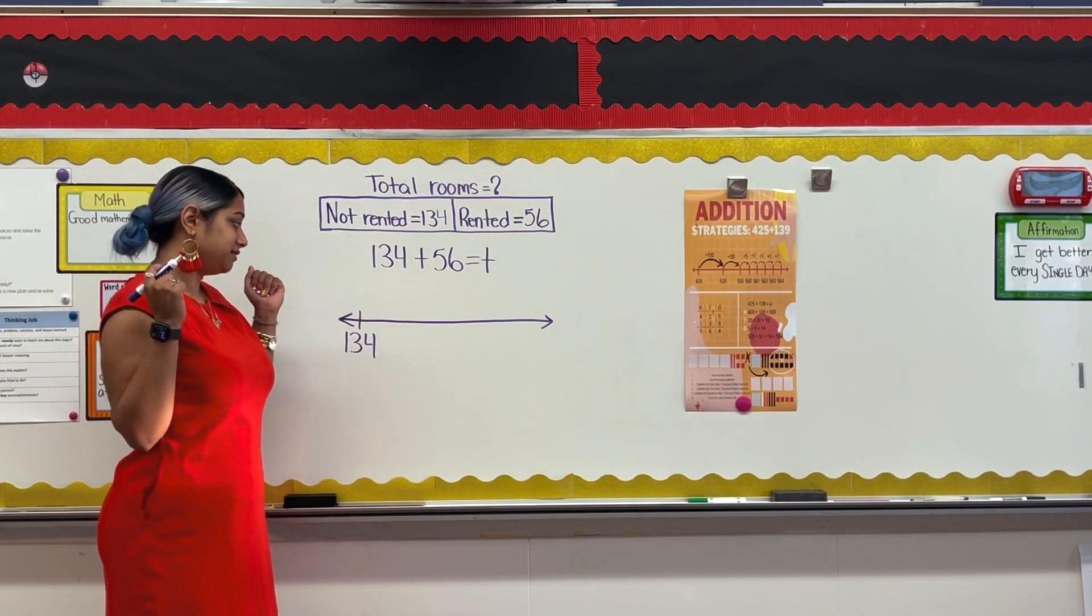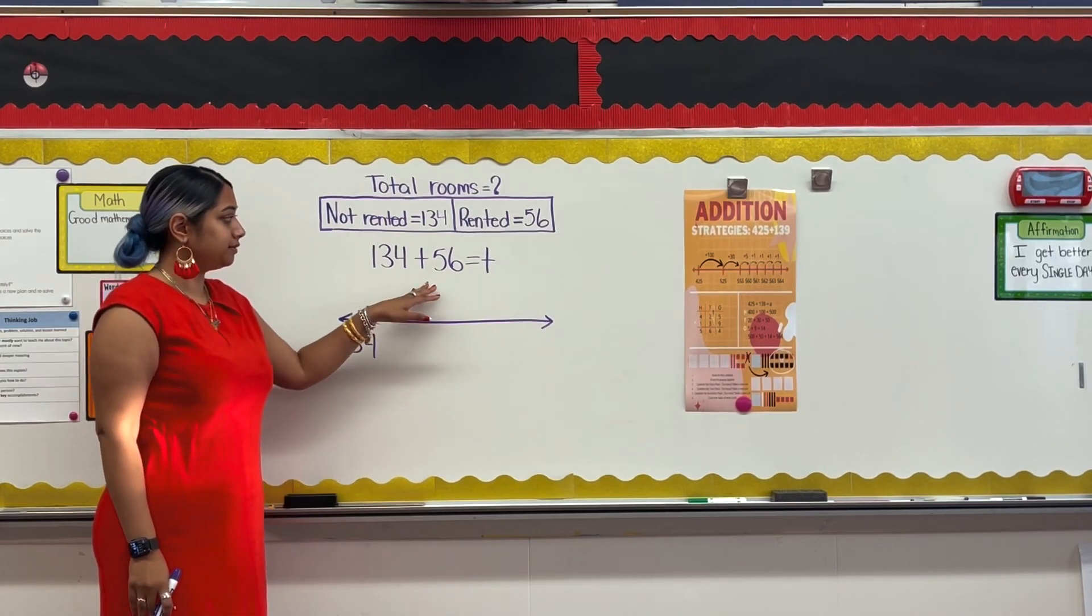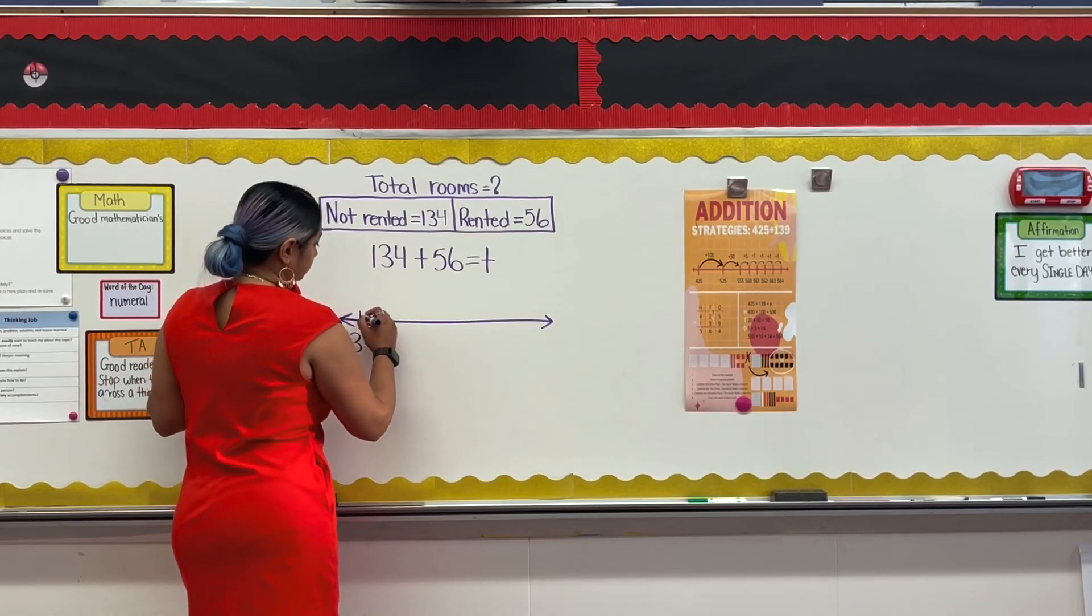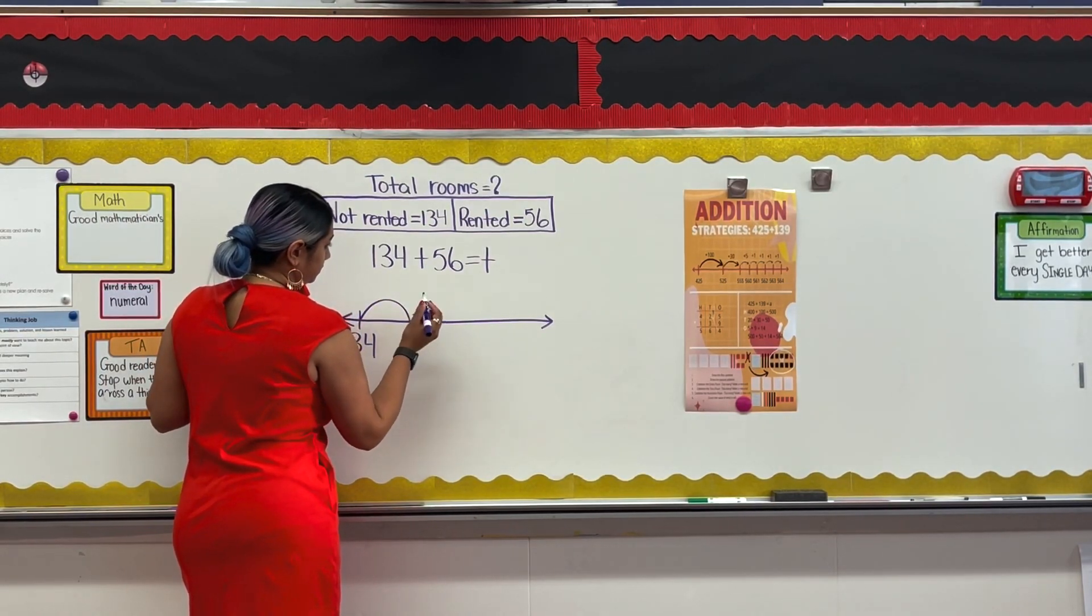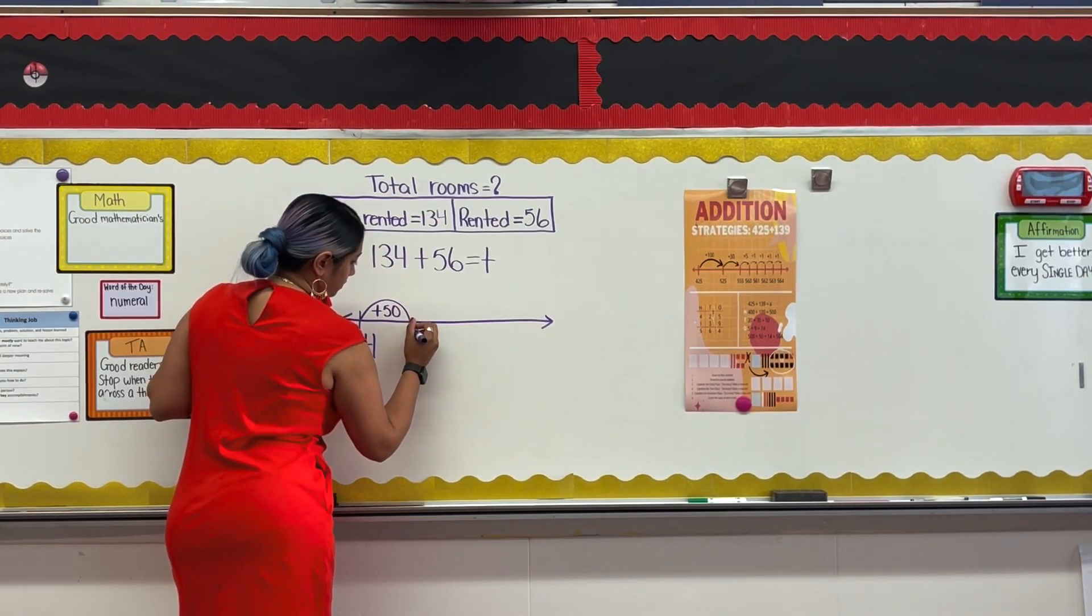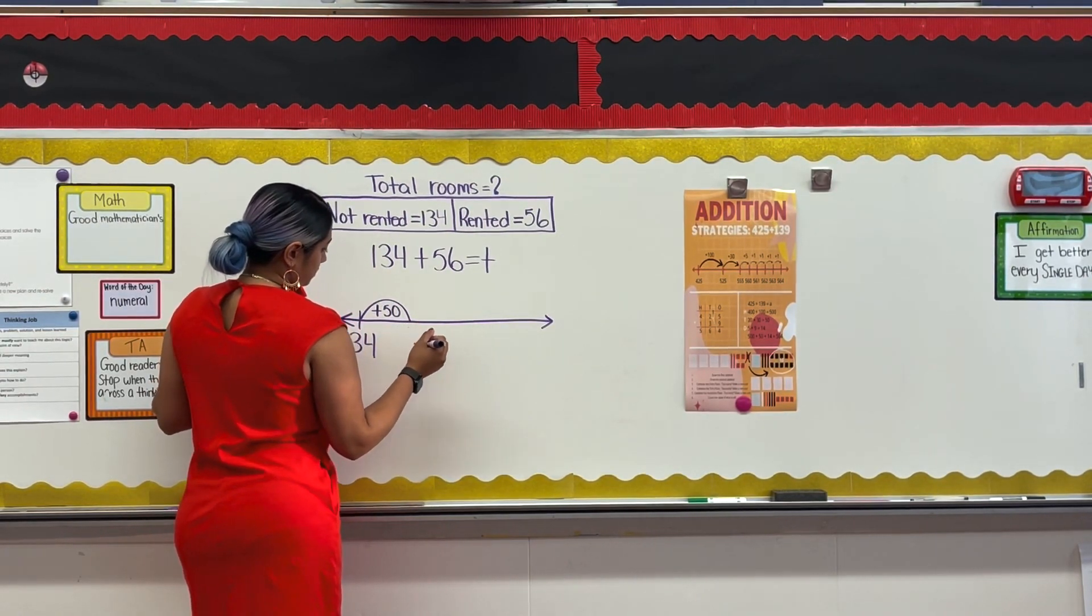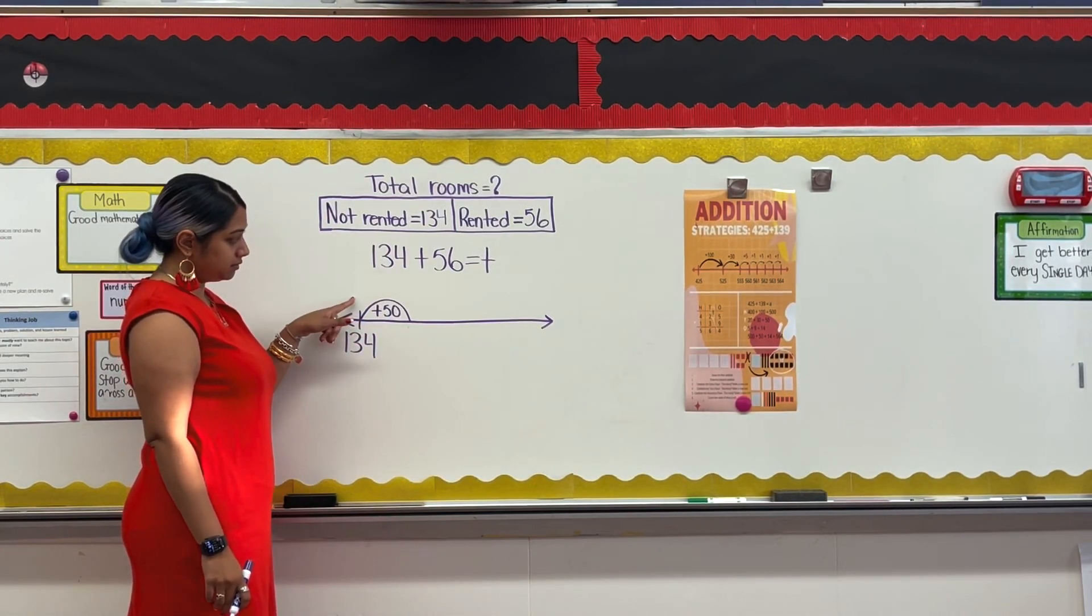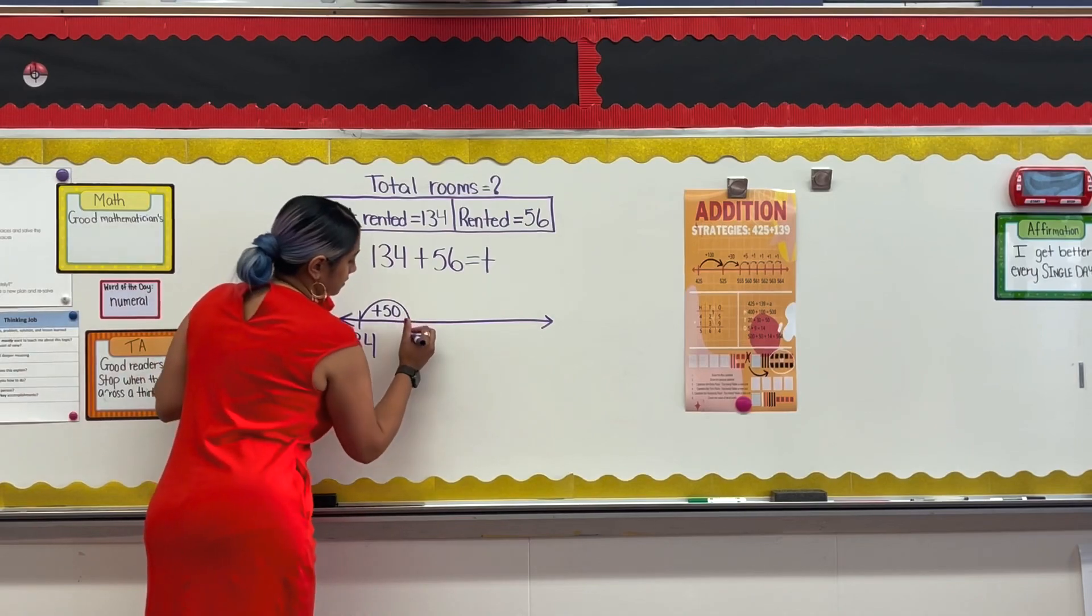But that is difficult to do in my head, so I'm going to break 56 into its place values, 50 and 6, and that will be easier to add them on my number line. I know 13 tens plus 5 tens is 18 tens, so 134 plus 50 is 184.